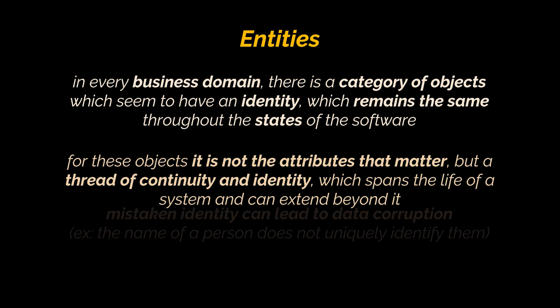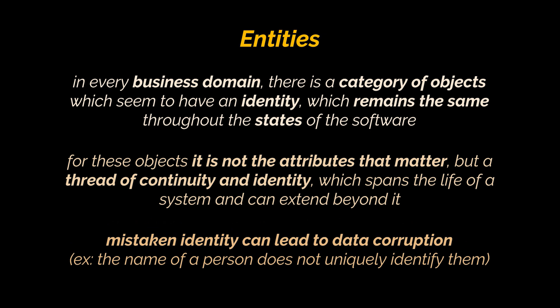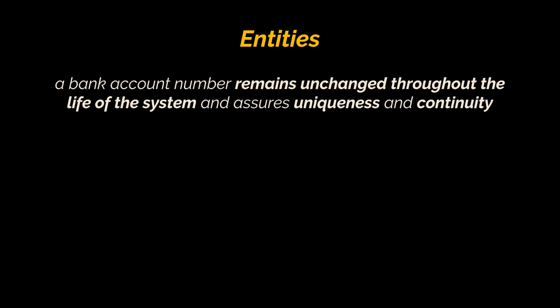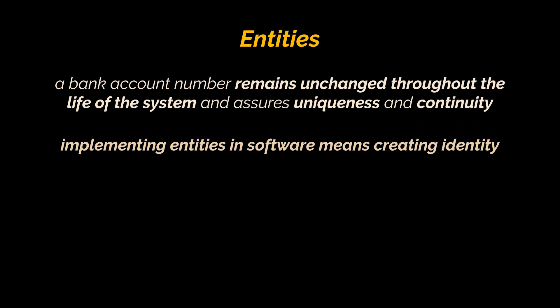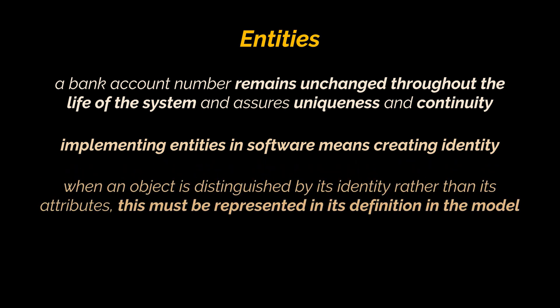A person class would have attributes like name, date of birth, place of birth, etc. Are any of those attributes the identity of the person? Name cannot be the identity as we can have many people holding the same name — the same goes for the others. Mistaken identity can lead to data corruption. However, if we consider a bank account, each account has its own number. An account can be precisely identified by its number, which remains unchanged throughout the life of the system and assures continuity.